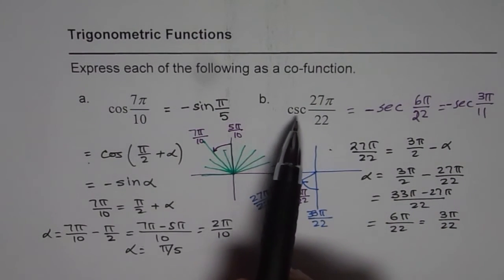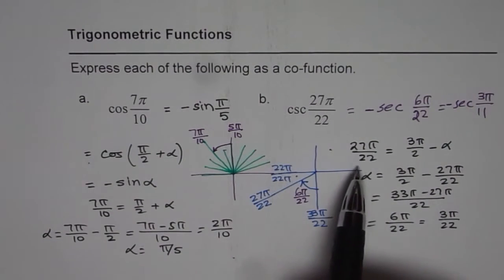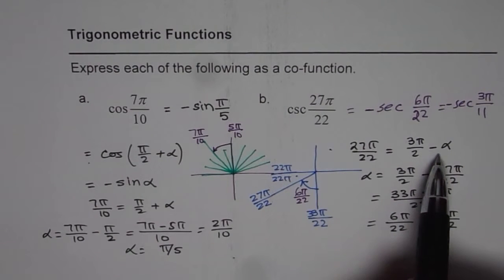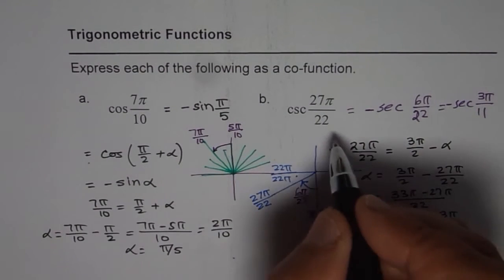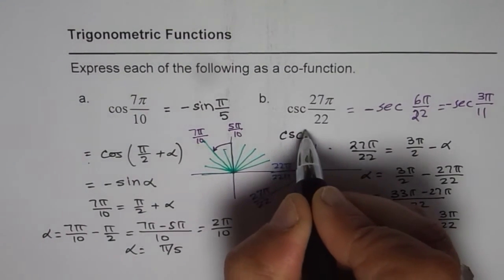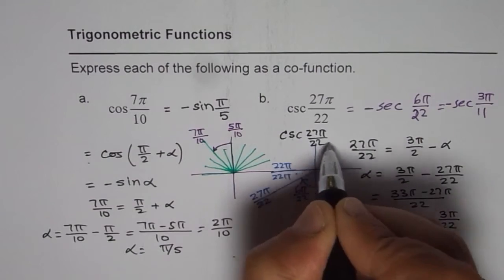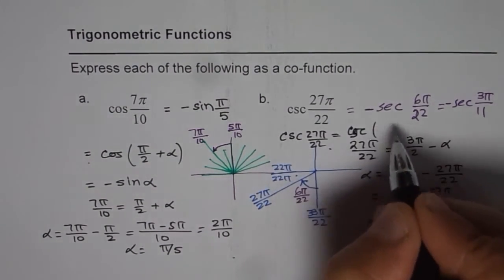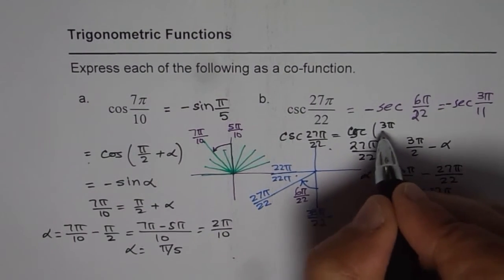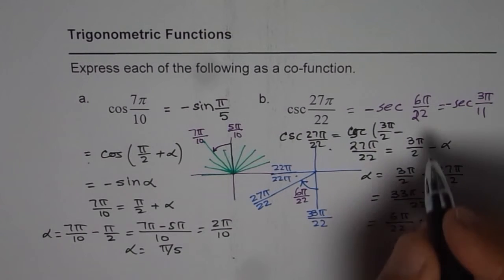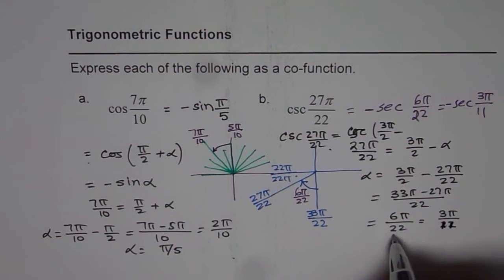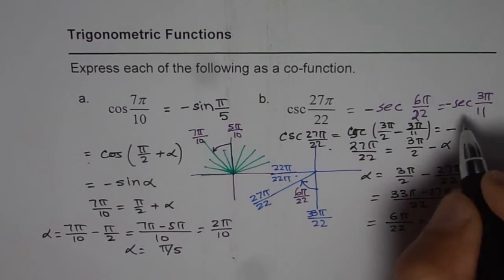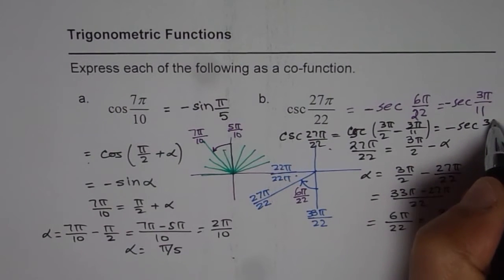So we get cosecant 27π/22 could be written as cosecant 3π/2 minus α, which will be equal to minus secant α. So we have cosecant 27π/22 is equal to cosecant 3π/2 minus 3π/11, which is minus secant 3π/11.